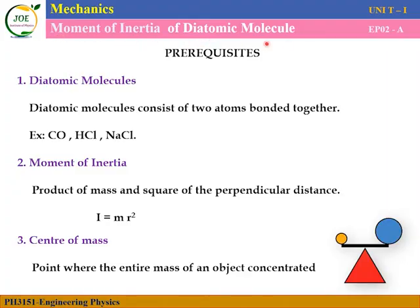For the moment of inertia of the diatomic molecule, some pre-requisites are needed. First, diatomic molecules: 'di' refers to two, and 'atomic' means atom. So a diatomic molecule consists of two atoms bonded together. For example, carbon monoxide — carbon and oxygen are bonded together — is a diatomic molecule.